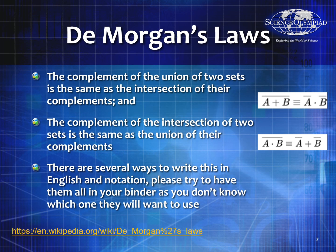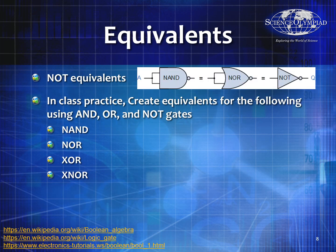Look at DeMorgan's laws — one applies to exclusive NORs and one to exclusive ORs. In both cases, DeMorgan's law tells you how to create an exclusive OR or an exclusive NOR gate. Once you create an exclusive OR, you simply put a NOT gate after the end of it to make an exclusive NOR.